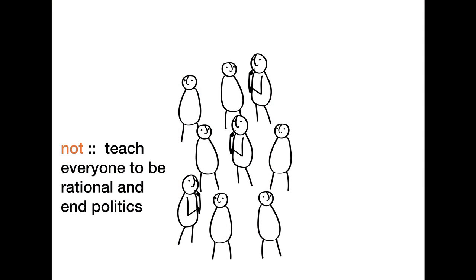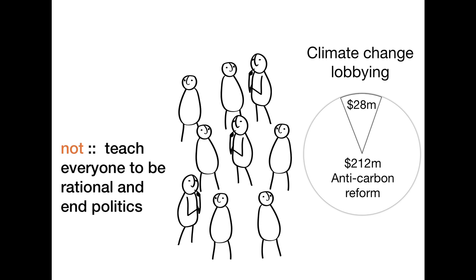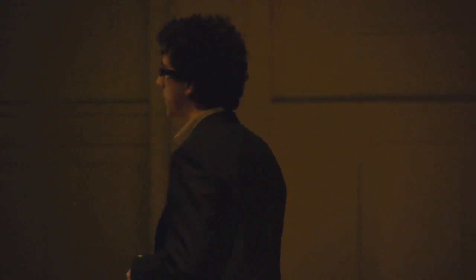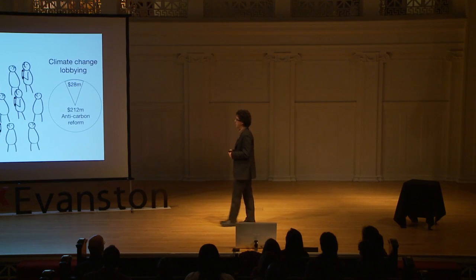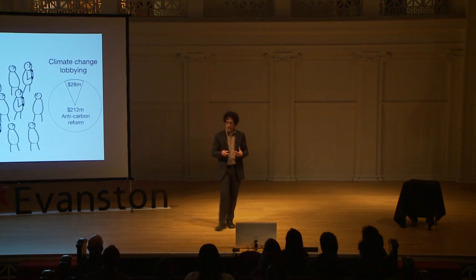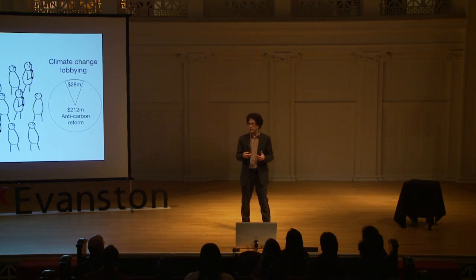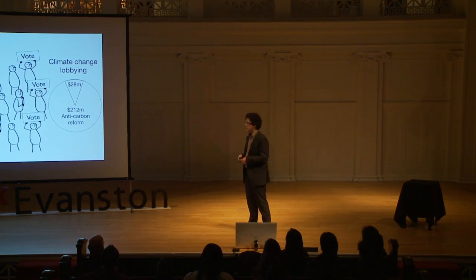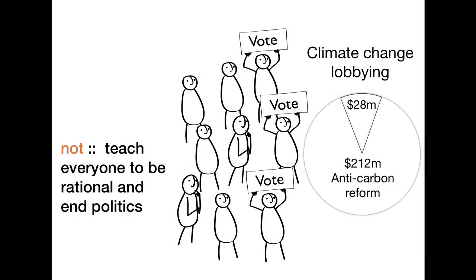Next, civic education is not about teaching everyone to be rational and somehow ending politics. The issue is that we have very disengaged, disorganized citizens and very organized private interests. And really, that shouldn't surprise us. If you didn't fund science education, we wouldn't have many scientists. So when we don't fund civic education, we don't get many engaged citizens. But just as in science education, if we can provide a general civic literacy for all and more advanced opportunities for some, we really can make a difference.